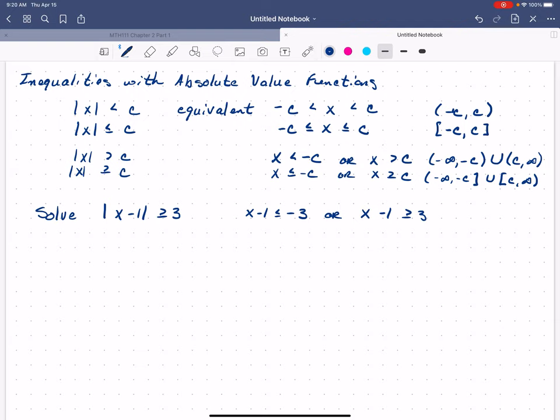So now what? Well, let's work with the leftmost inequality first and solve for x. We'll add one to both sides and we get x is less than or equal to negative 2, or add 1, x is greater than or equal to 4. Or in interval notation, this is negative infinity to negative 2, unioned with 4 to infinity.